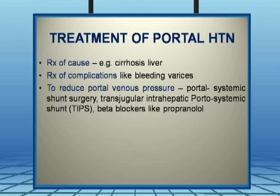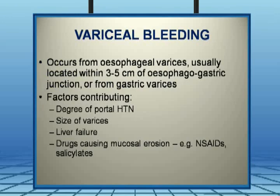Treatment of portal hypertension involves treating the underlying cause, managing complications such as hemorrhage or hepatic encephalopathy as they arise, and reducing portal venous pressure. Options include portosystemic shunt surgery, TIPS (transjugular intrahepatic portosystemic shunt), and long-term oral beta blockers like propranolol, which is very effective in this condition.